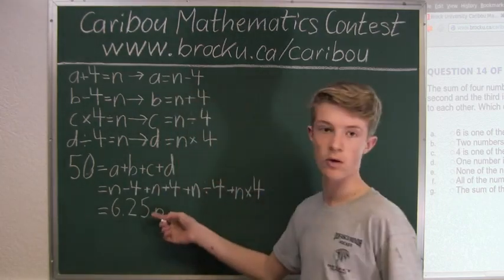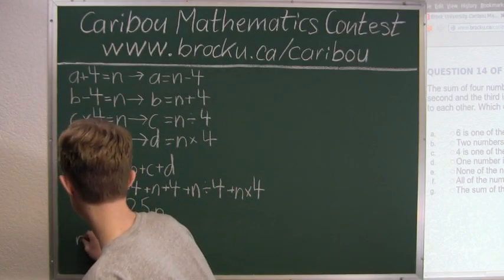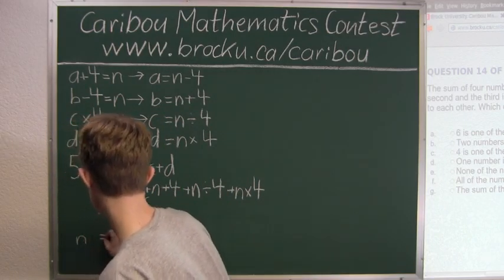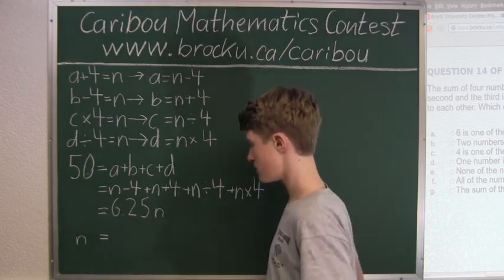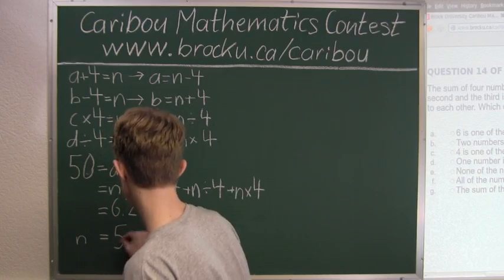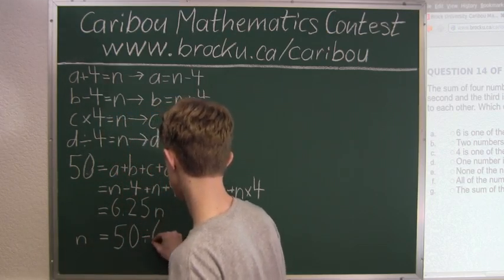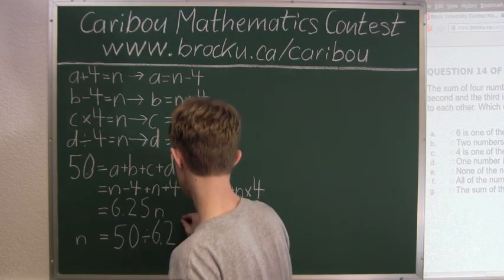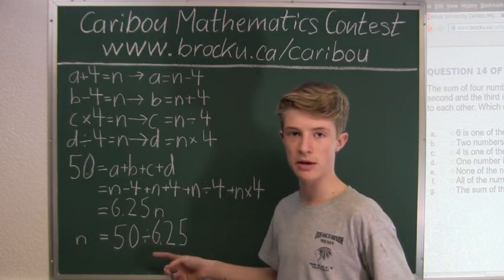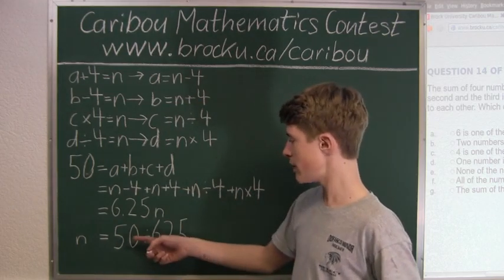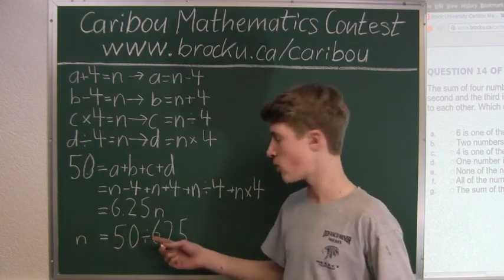Now we only want N. So now we would have N equals fifty divided by six point twenty-five. Since we want a whole number in the denominator, we would multiply the numerator, which is fifty, and the denominator, which is six point twenty-five, both by four.